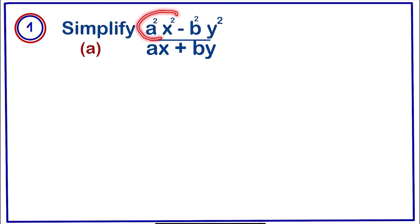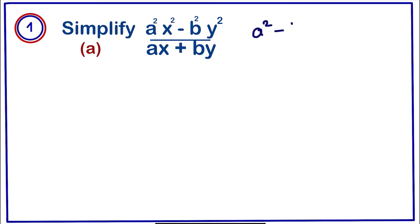Looking at this question, we can see that we have ax squared minus b squared y squared. We can recognise this as the difference of two squares, so we are going to use the formula for the difference of two squares. The formula states that a squared minus b squared is equal to (a + b)(a - b).